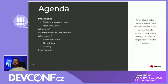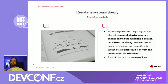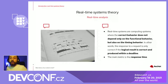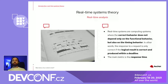What is real-time? Real-time systems are computing systems where correct behavior depends not only on the functional behavior, but also on the timing behavior. That is, the logical result is only correct if it is produced before a given deadline — so the response time is also important.